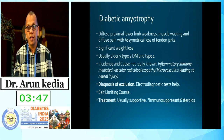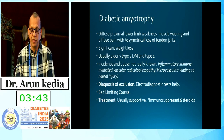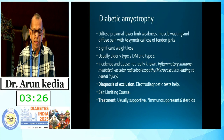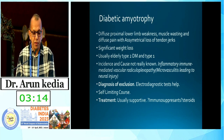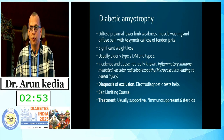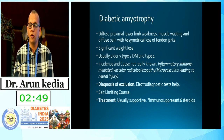Diabetic amyotrophy is an important observation in diabetes patients, characterized by diffuse proximal lower limb weakness, advanced muscle wasting, diffuse pain, asymmetrical loss of tendon jerks, and significant weight loss — usually in elderly type 2 or uncontrolled type 1 diabetes patients. It is an inflammatory immune-mediated vascular radiculoplexopathy or microvasculitis leading to neuronal injury. Diagnosis is by exclusion, supported by electrodiagnostic tests. The course is usually self-limiting; trials with steroids or immunosuppressants have been largely unsuccessful. Treatment is preventive: good glycemic control and resistance exercises to prevent sarcopenia.